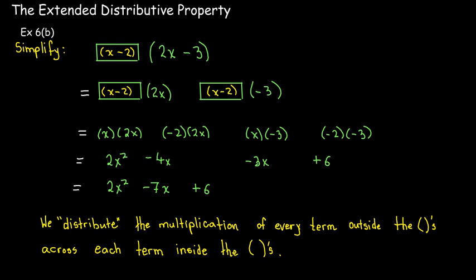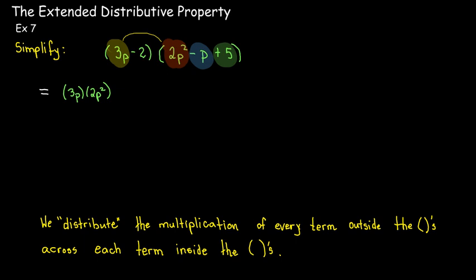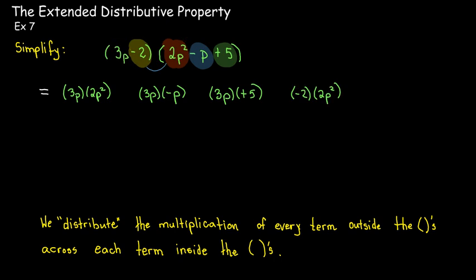We're going to distribute every term in the first group across every term in the second group. For example, multiplying 3p minus 2 times the quantity 2p squared minus p plus 5, I take the 3p and multiply it times each term in the second group, giving three products: 3p times 2p squared, 3p times negative p, and 3p times positive 5. Then I move to the second term, negative 2, and multiply it times each term: negative 2 times 2p squared, negative 2 times negative p, and negative 2 times positive 5.